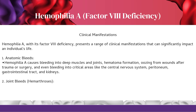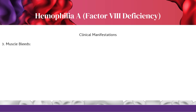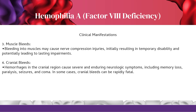Joint bleeds (Hemarthrosis): Acute joint bleeds are intensely painful, leading to temporary immobilization. Chronic joint bleeds cause inflammation and can result in permanent loss of mobility. Muscle bleeds: Bleeding into muscles may cause nerve compression injuries, initially resulting in temporary disability and potentially leading to lasting impairments. Cranial bleeds: Hemorrhages in the cranial region cause severe and enduring neurologic symptoms, including memory loss, paralysis, seizures, and coma. In some cases, cranial bleeds can be rapidly fatal.